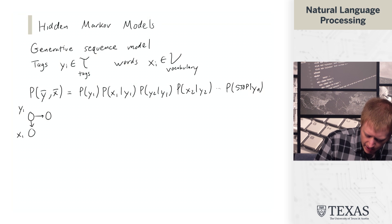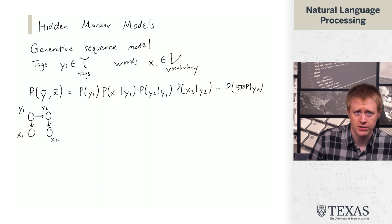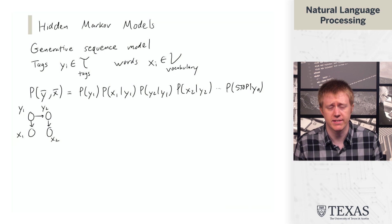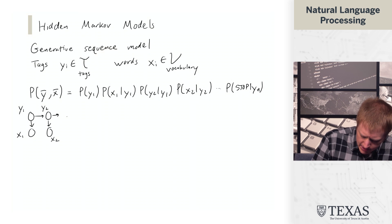And then we generate a second tag, y2, and then the second word, x2, conditioned only on that tag, y2. And then we continue until we have yn, which gives xn, and then stop.